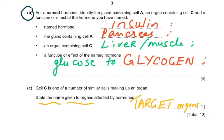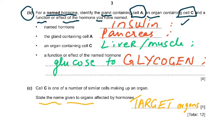Part B: for a named hormone, identify the gland containing cell A (where it is produced), an organ containing cell C (where it works), and a function of the hormone. The named hormone is insulin. It is produced in the beta cells of the pancreas — just saying pancreas gets the mark. It works in the liver cells or the muscle cells; either answer gets one mark.